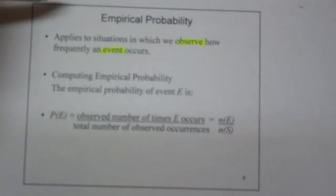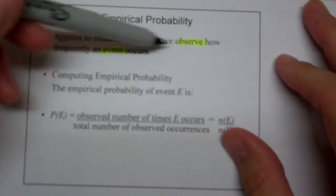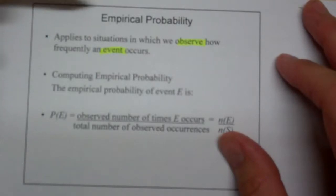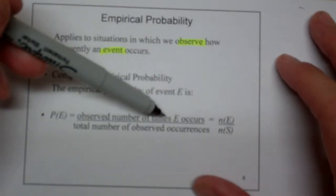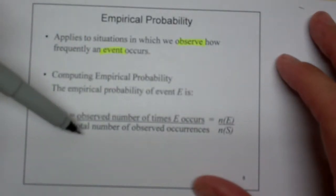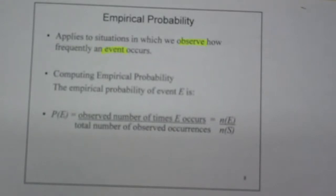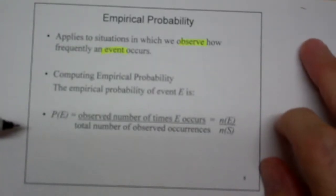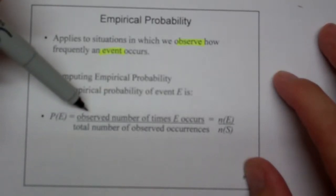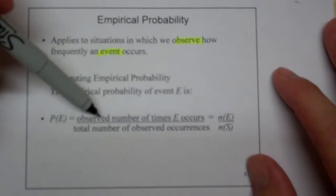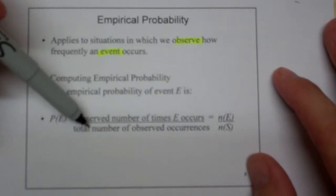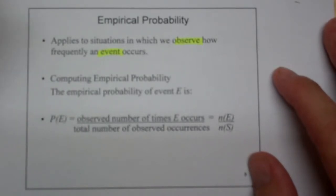So in a theoretical probability, we can run an experiment, and that's how we observe an event. In an empirical probability, we have to wait for a situation where we can observe an event. Now, the nice thing is, is the observed number of times that occurs, n of E, divided by the total number of observed occurrences is n over S, is the exact same formula. It's just that I can't roll a dice here and figure out whether the hurricane is going to hit me or not. I need some other way of looking at that. So if I got hit by three hurricanes out of the last 50 that formed in the Atlantic, then I would say that my observed probability is 3 in 50 that another hurricane is going to hit me.